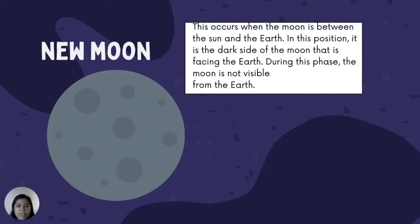New Moon: This occurs when the moon is between the sun and the earth. In this position, it is the dark side of the moon that is facing the earth. During this phase, the moon is not visible from the earth.